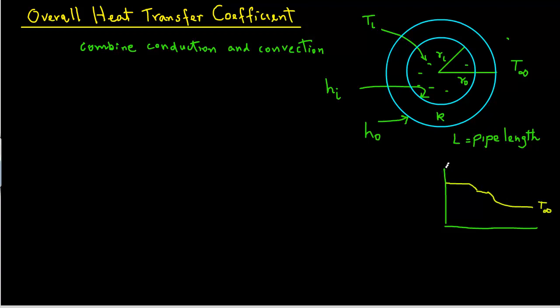So we will use the approach of thermal resistance values to obtain an expression for the overall heat transfer coefficient. We can write that Q, that's the rate of heat transfer, equals Ti minus T infinity divided by RT. Where RT is a combination of various thermal resistances. So let's see what kind of thermal resistances are there in this case.